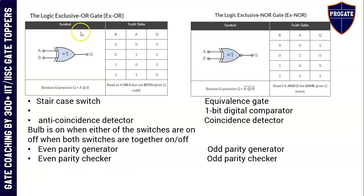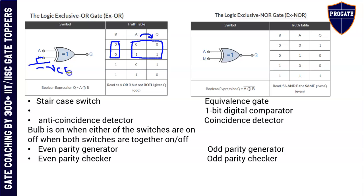XOR gate is used as an even parity generator and even parity checker circuit. One important useful property of the XOR gate: whenever any one of the inputs is grounded, the XOR gate acts as a buffer, because whatever the other input is, it passes as-is to the output. Likewise, if any one of the inputs — say B — is connected to VCC permanently, connected to logic 1, then this XOR gate acts as a NOT gate, because with one input tied to logic 1, whatever input you give to the other terminal is negated and presented at the output. So: XOR gate acts as a buffer if one input is grounded; XOR gate acts as a NOT gate if one input is tied to VCC or logic 1.